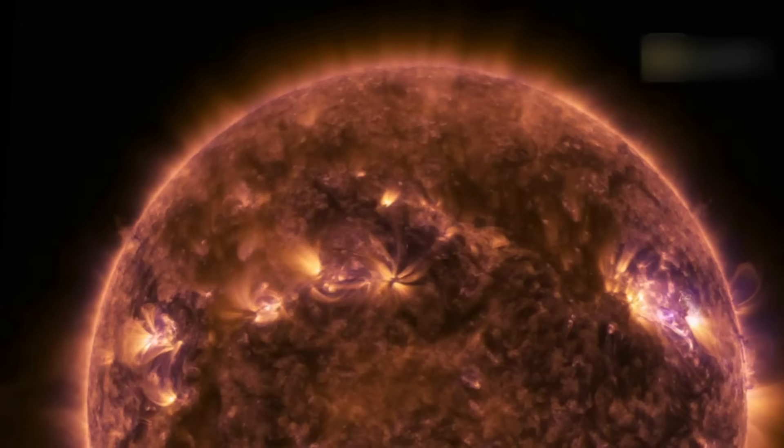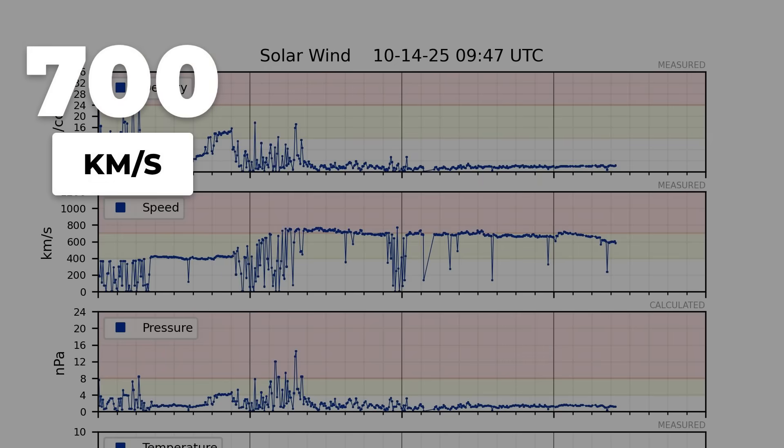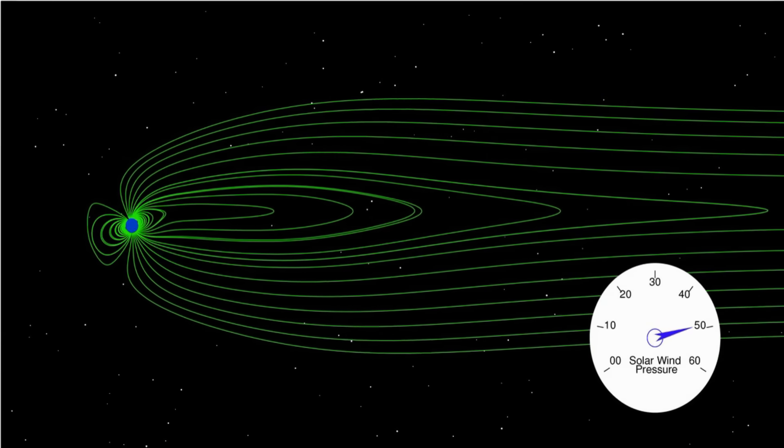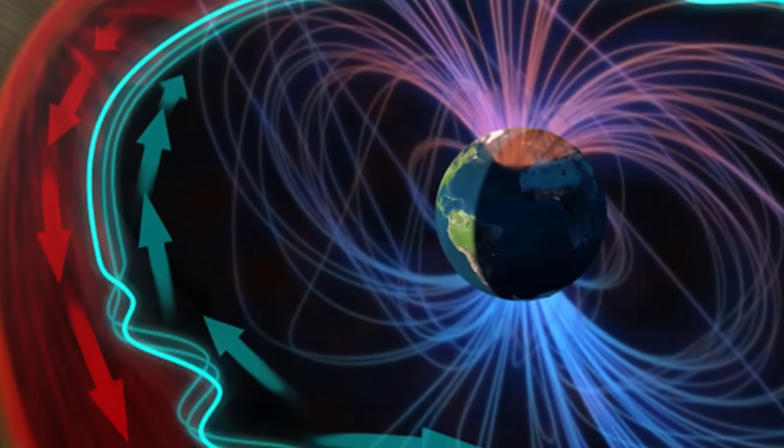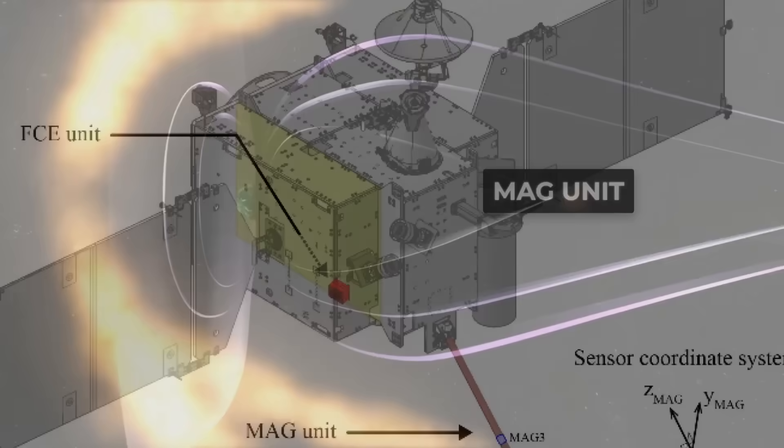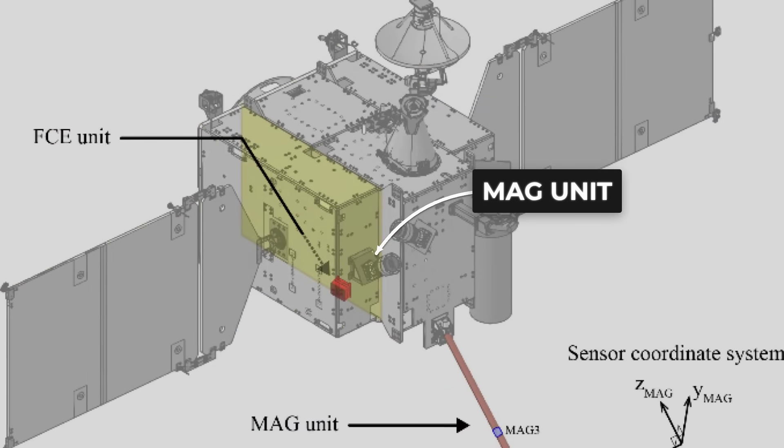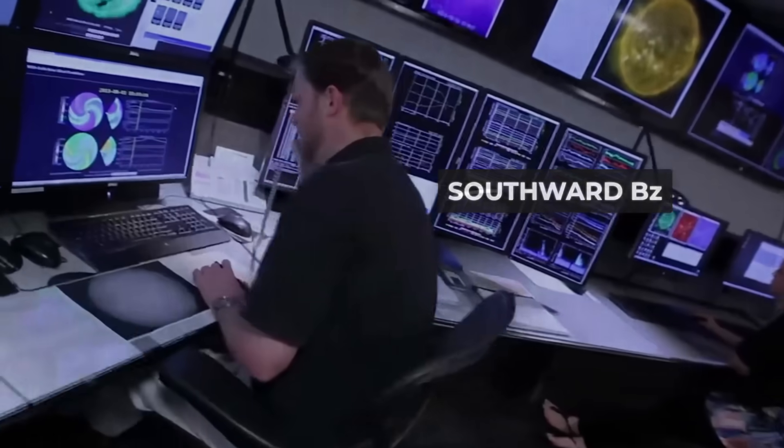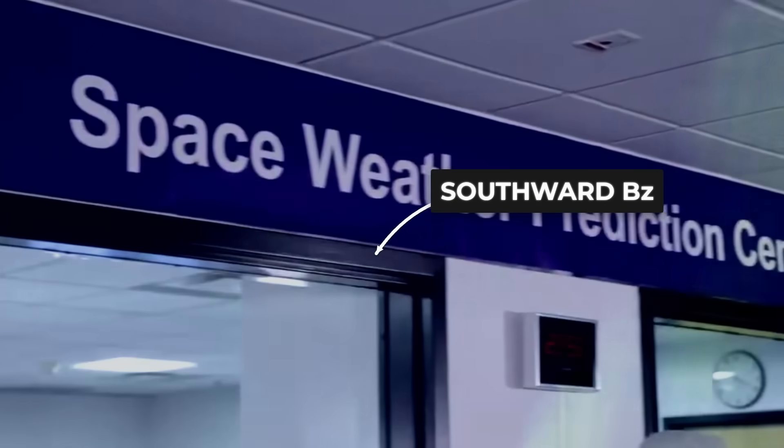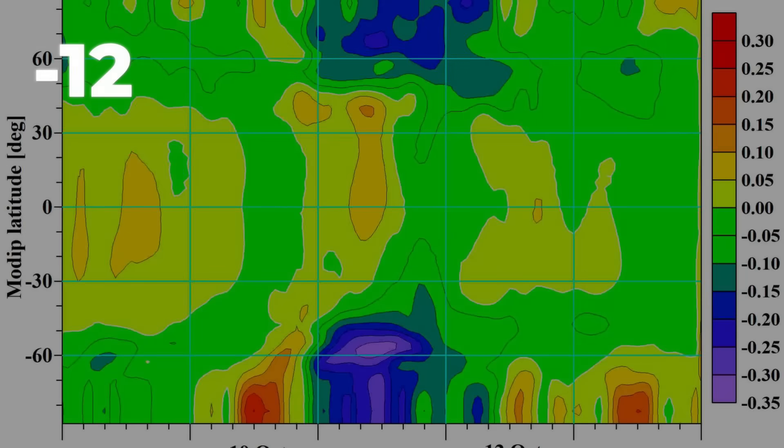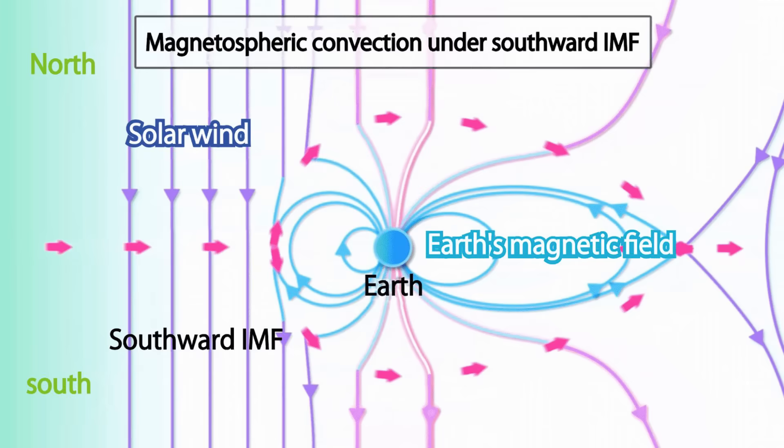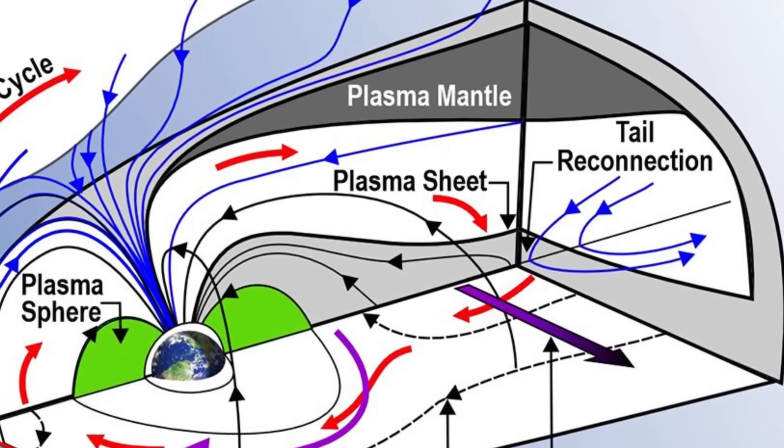Solar wind doesn't simply brush past Earth. When a high-speed stream arrives, especially one clocked at 700 kilometers per second, the planet's magnetic shield is forced into a direct contest. The real drama unfolds at the boundary where solar and terrestrial fields collide. Here, the Interplanetary Magnetic Field, or IMF, acts as the key. In October 2025, the IMF pointed sharply southward, holding steady near minus 12 nanotesla. That orientation is critical because Earth's own field points north. Opposite directions mean the fields can snap together, a process called magnetic reconnection. This is the gateway for solar energy to pour into the magnetosphere.